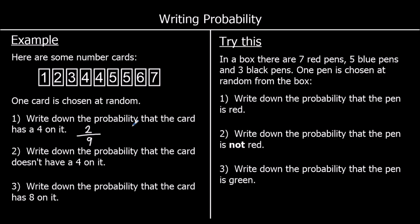We can write a probability as a fraction, a decimal or a percentage. Question 2: write down the probability that the card doesn't have a 4 on it. The probability it has a 4 and the probability it doesn't have a 4 must add up to 1. So if we've got 2 ninths, how many more to make 9 ninths? That's 7 more ninths. So the answer is 7 ninths. Question 3: write down the probability that the card has an 8 on it. There are no 8s, so it's impossible — there's 0 chance. The answer is 0.